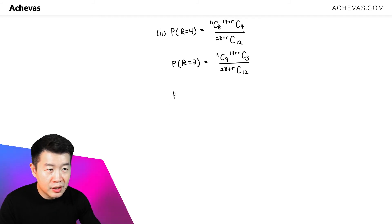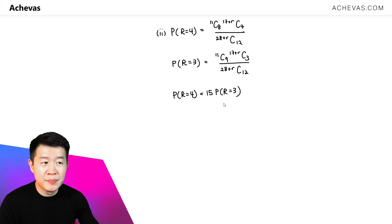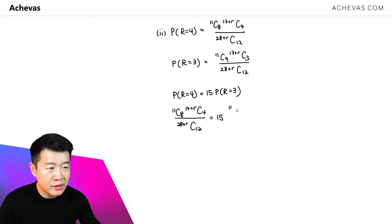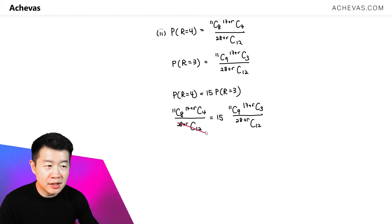According to the question, the probability that R equals 4 is equal to 15 times the probability that R equals 3. So: P(R=4) = [11C8 × (17+R)C4] / [(28+R)C12], and this equals 15 × [11C9 × (17+R)C3] / [(28+R)C12]. Since they share a common denominator, it cancels off.